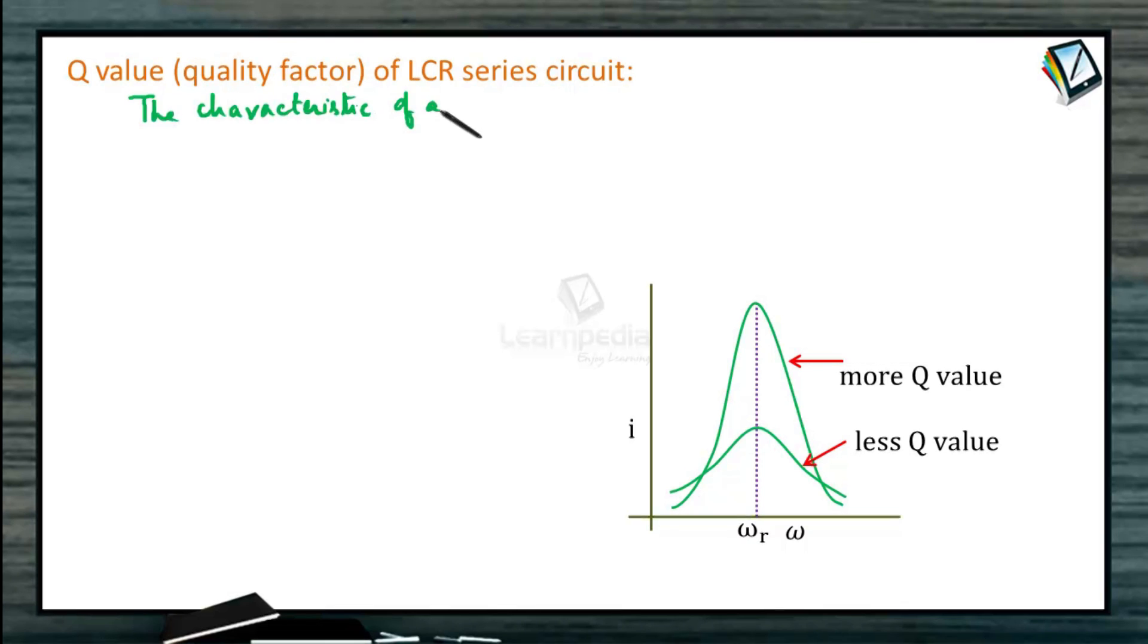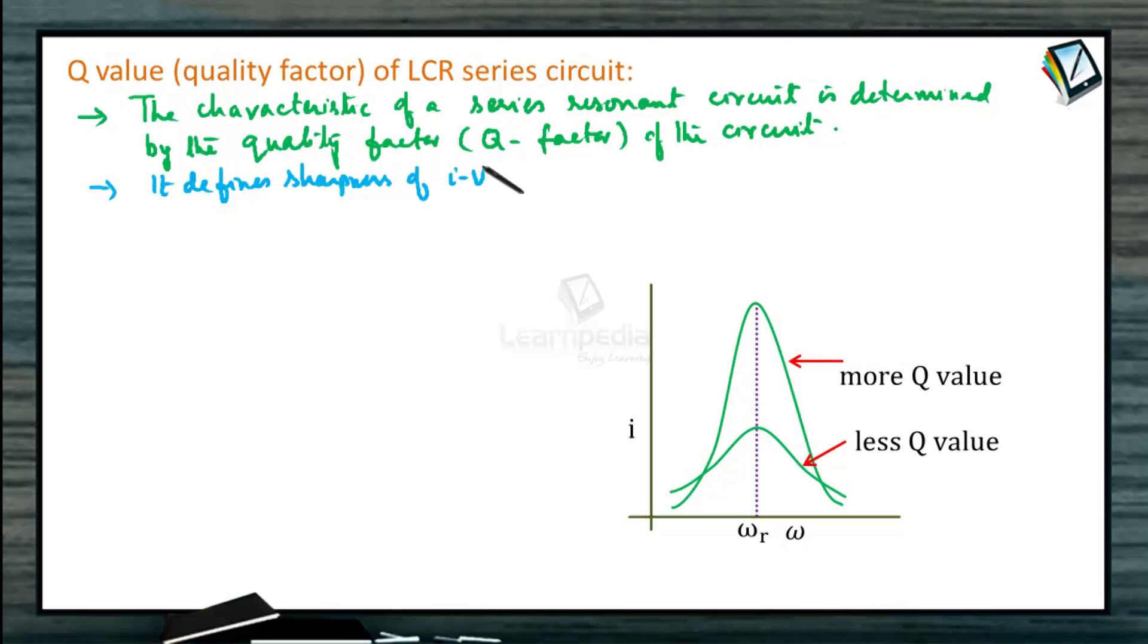It defines sharpness of IV curve. This is the IV curve at resonance. When Q factor is large, the sharpness of resonance curve is more and vice versa.